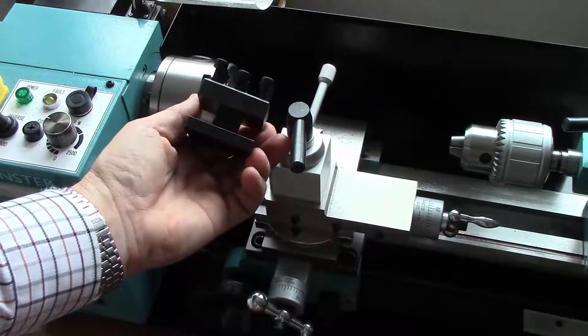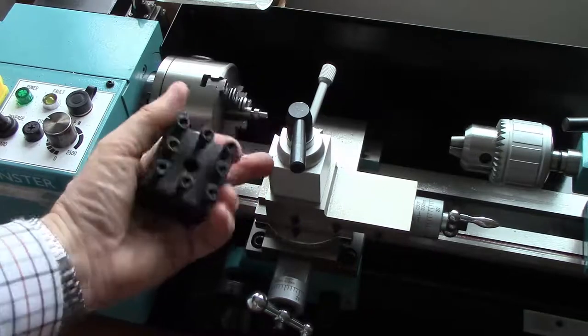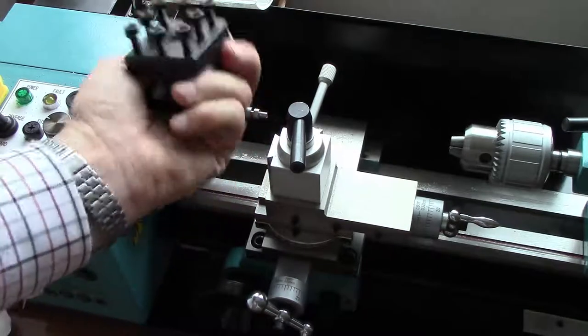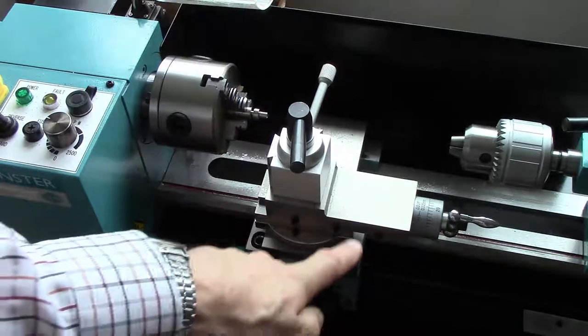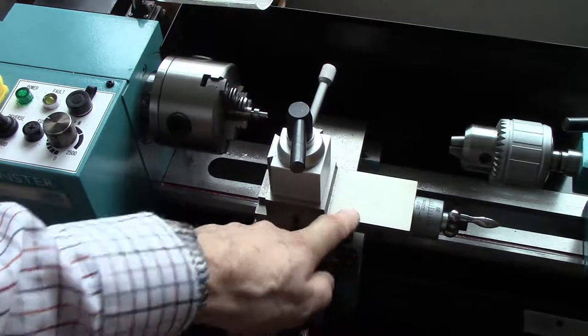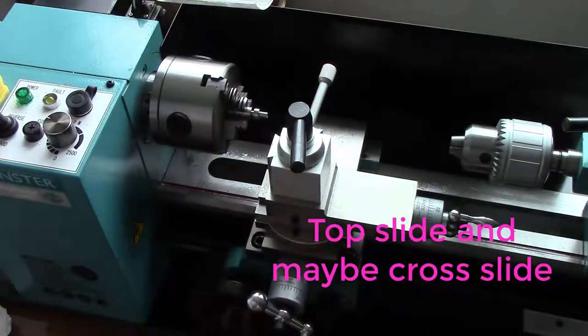But I think you can see from the video clip that in fact the tool holder is not the thing that's flexing. It's the cross slide and other things lower down.